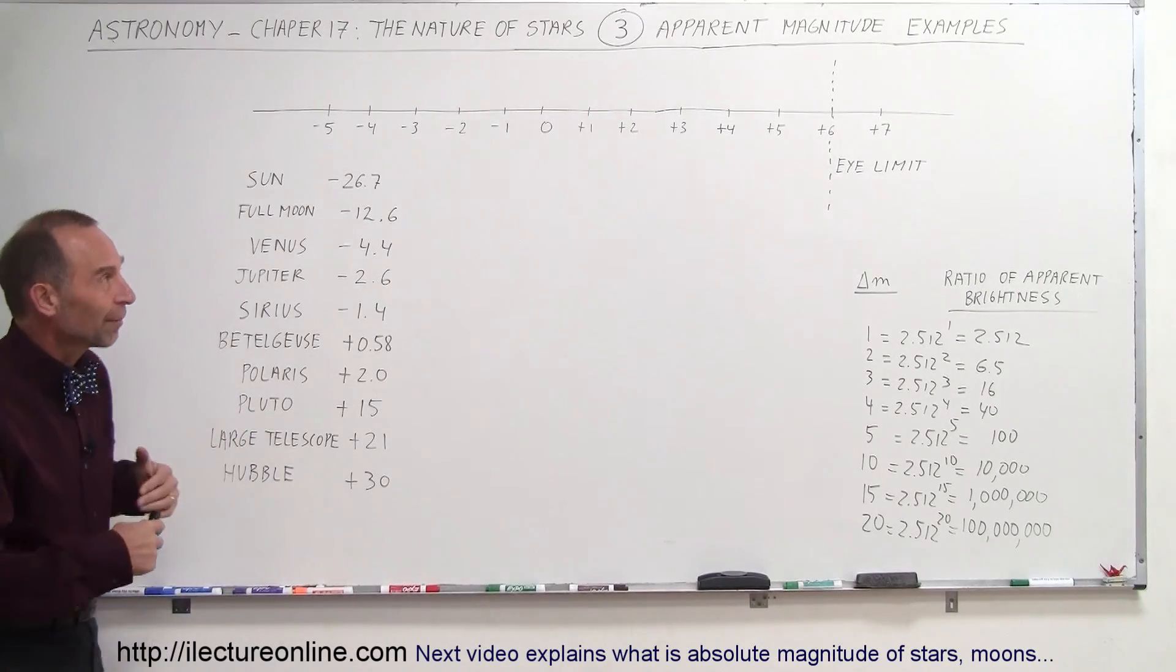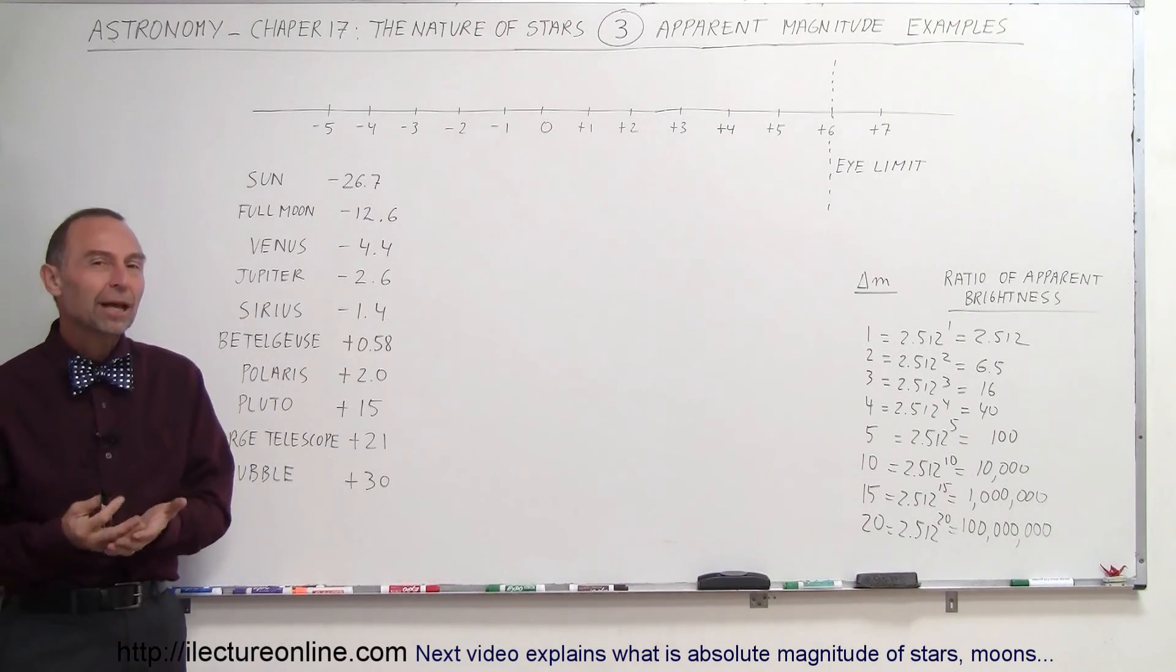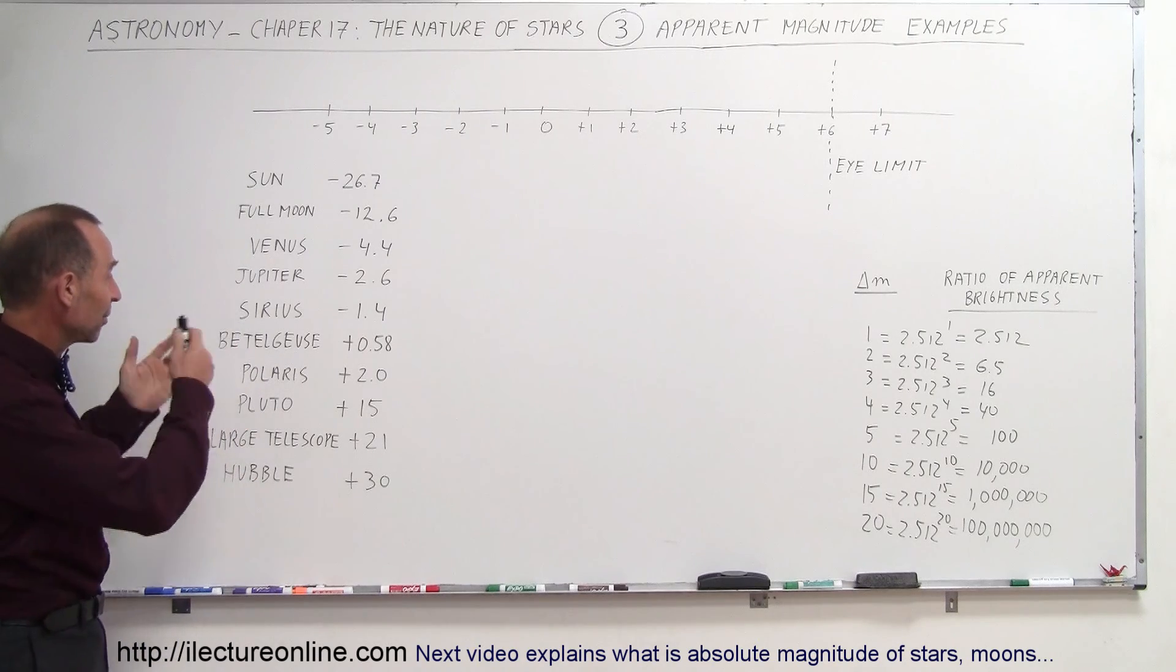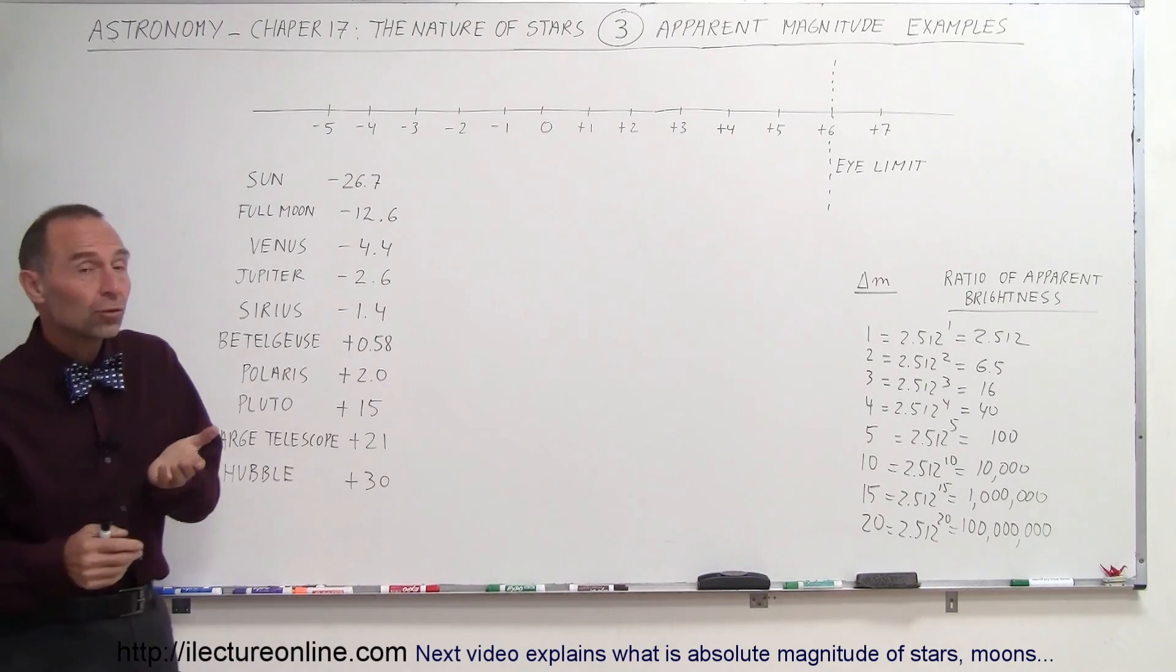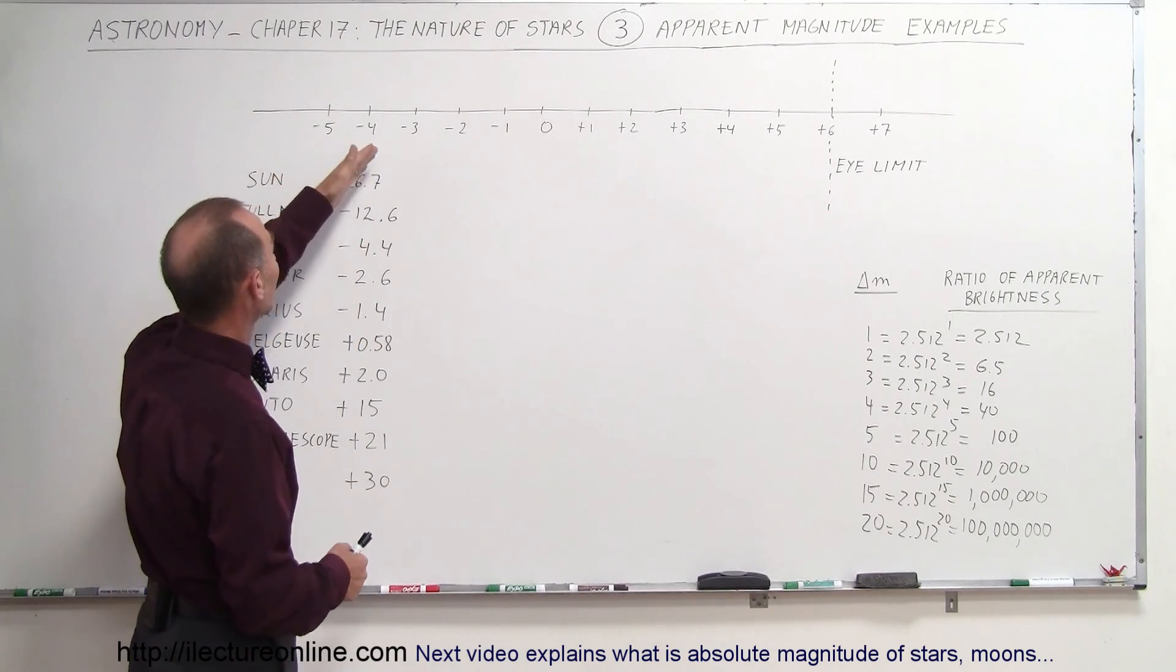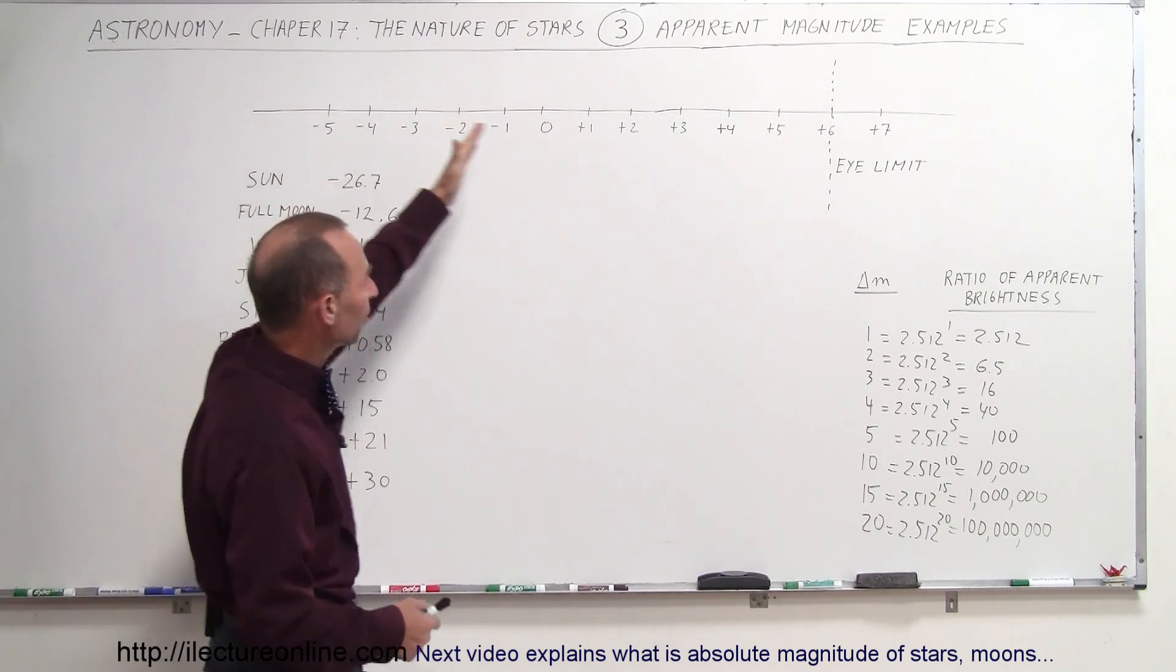Welcome to our lecture online. To give us some idea of what apparent magnitude really means, let's have some examples here. I put down a list of examples, reviewing that the apparent magnitude scale is a numeric scale. It goes all the way from some negative values to positive values.